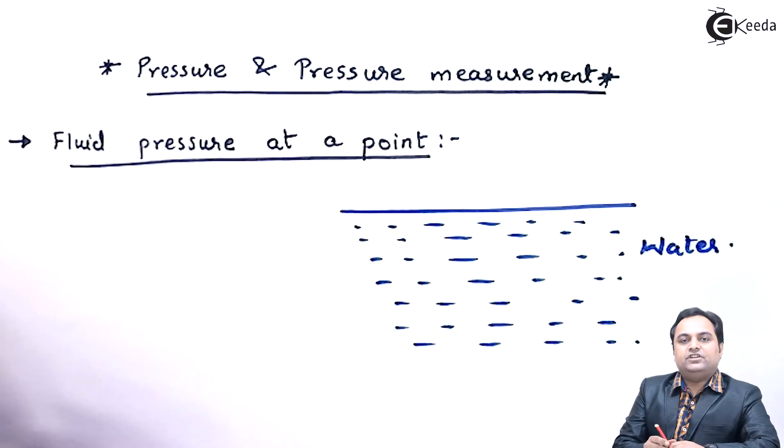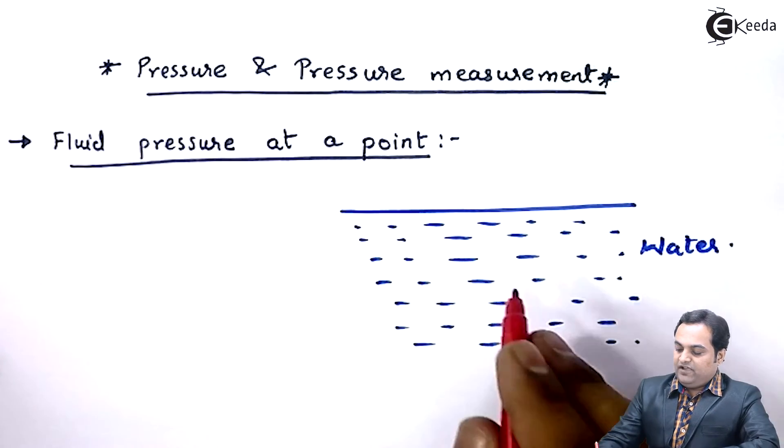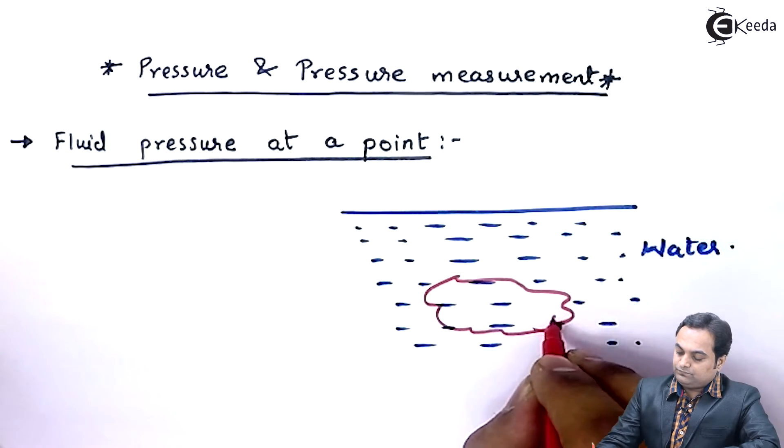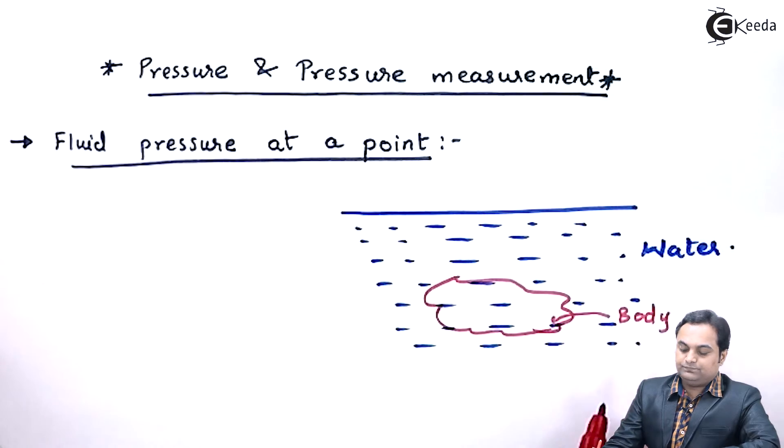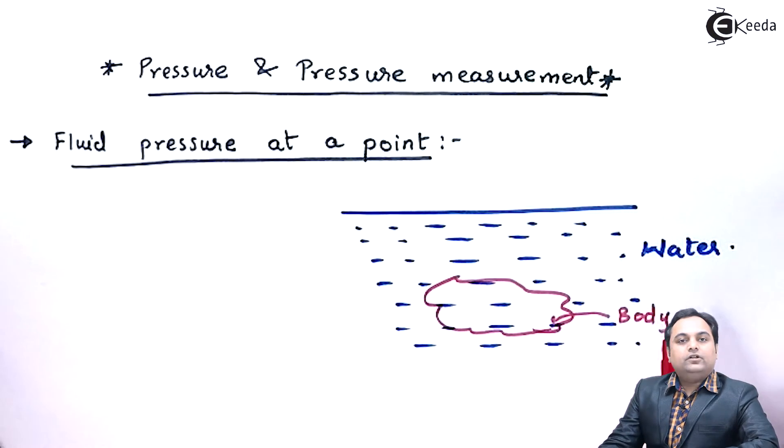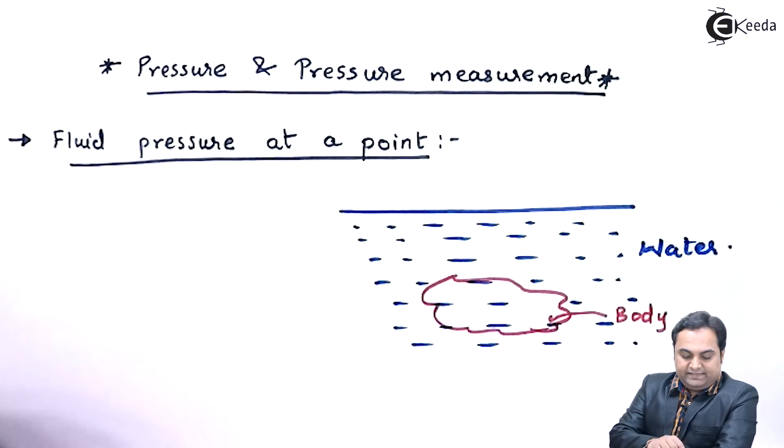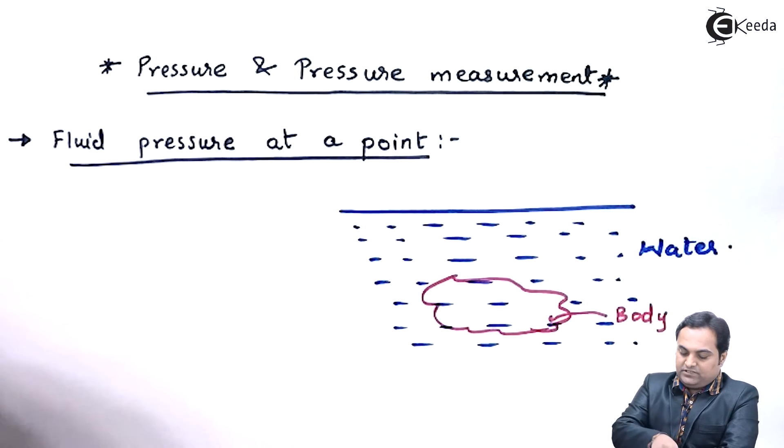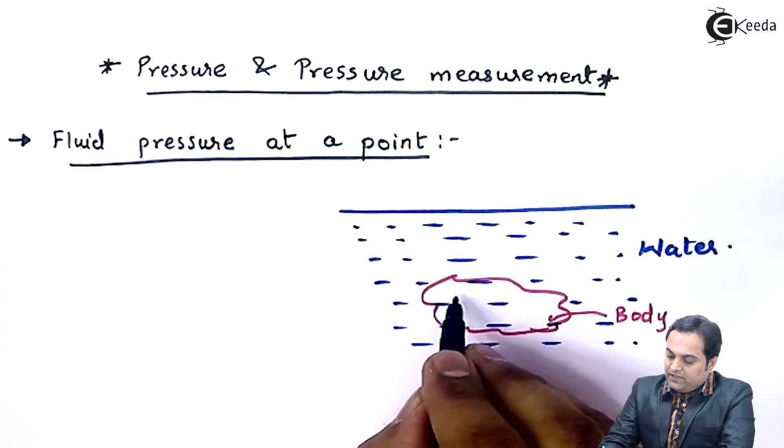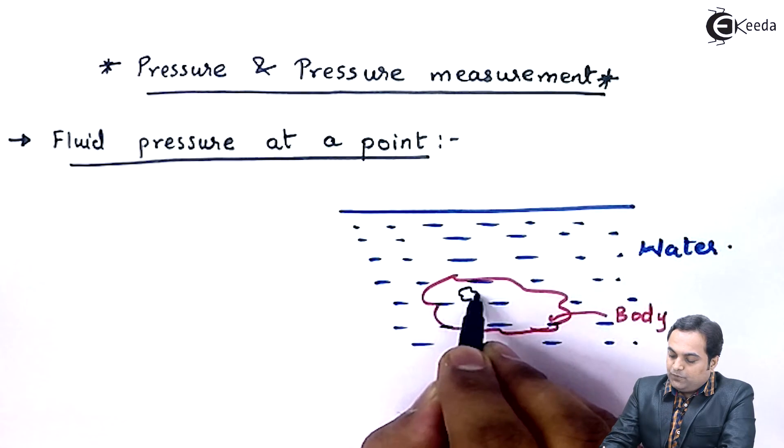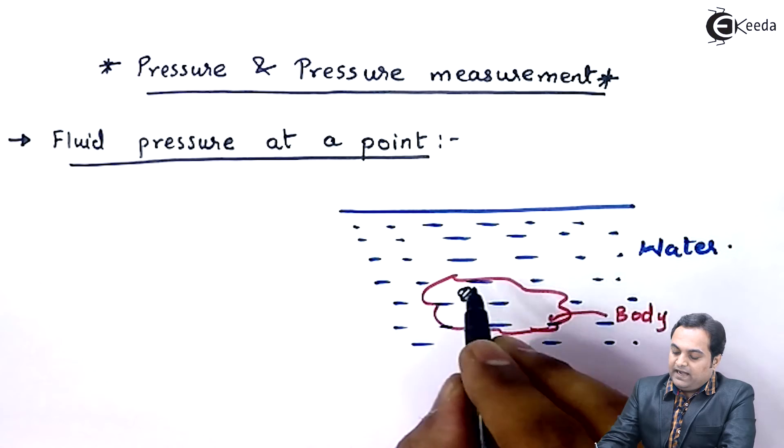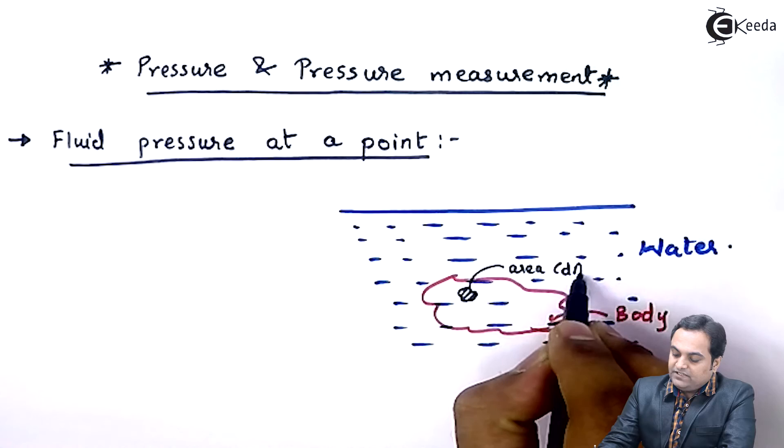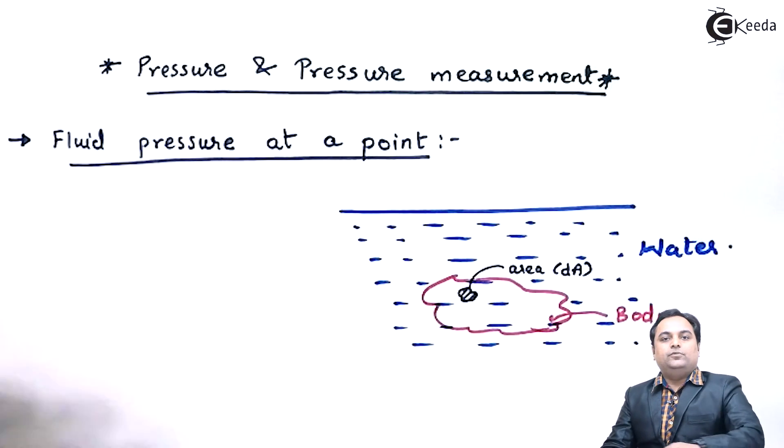I am assuming that this fluid is water. Inside this water if we have a body of any given shape, so there would be a pressure acting on this body. Now how this pressure would be acting? Suppose if I take a very small area of this body, I will call this area as dA.